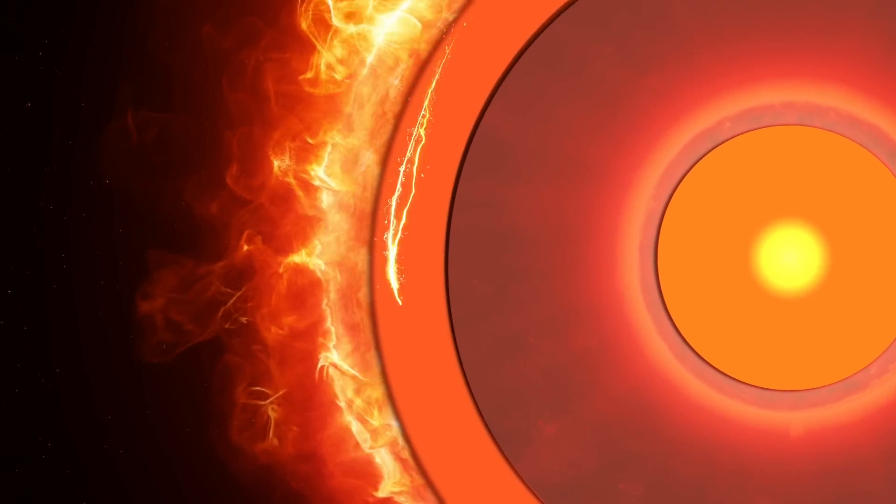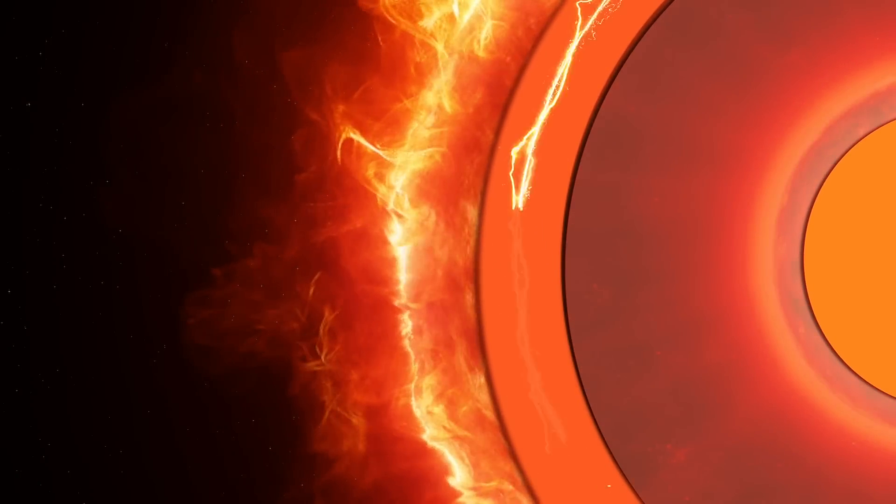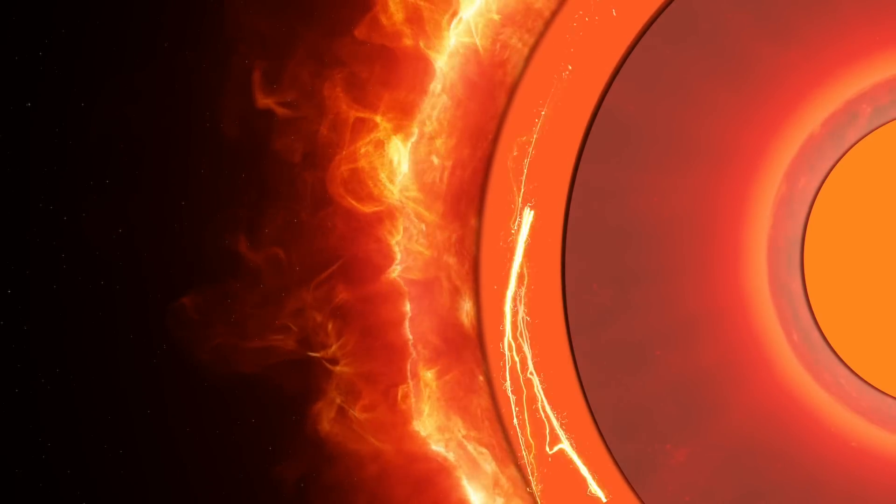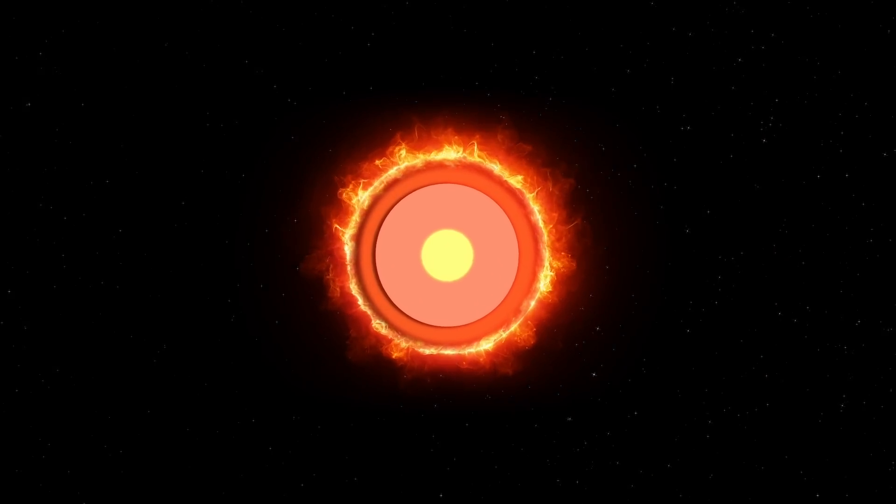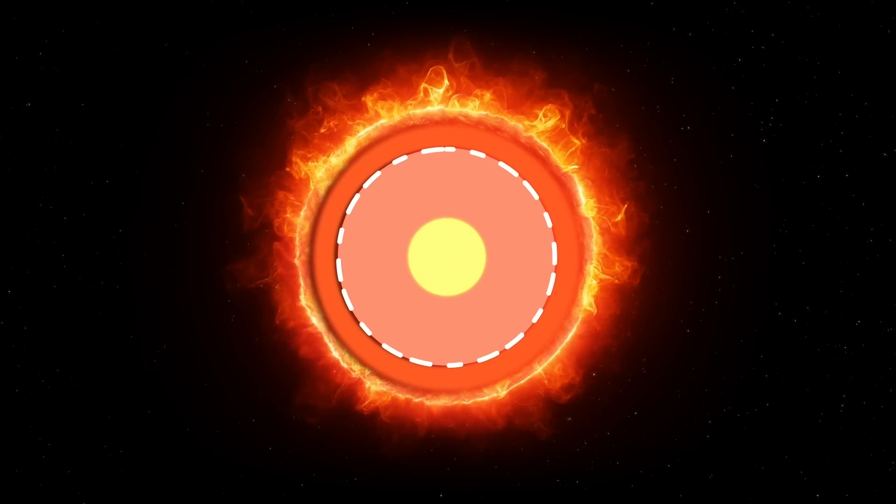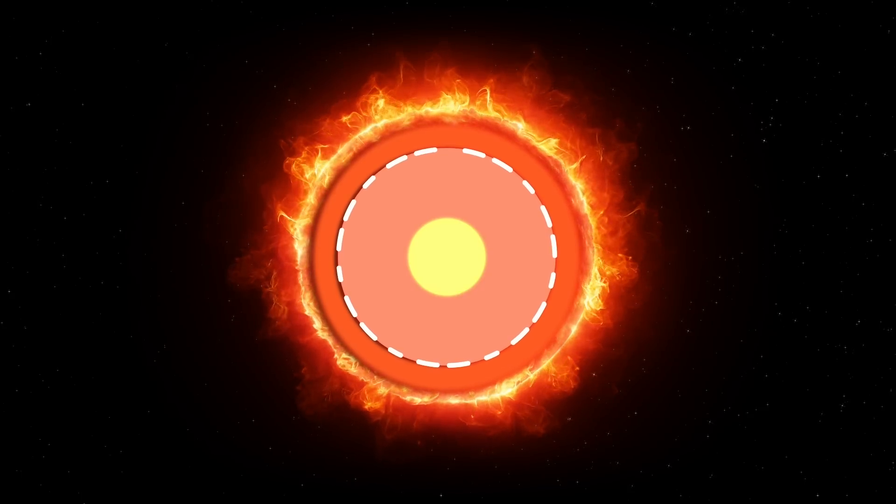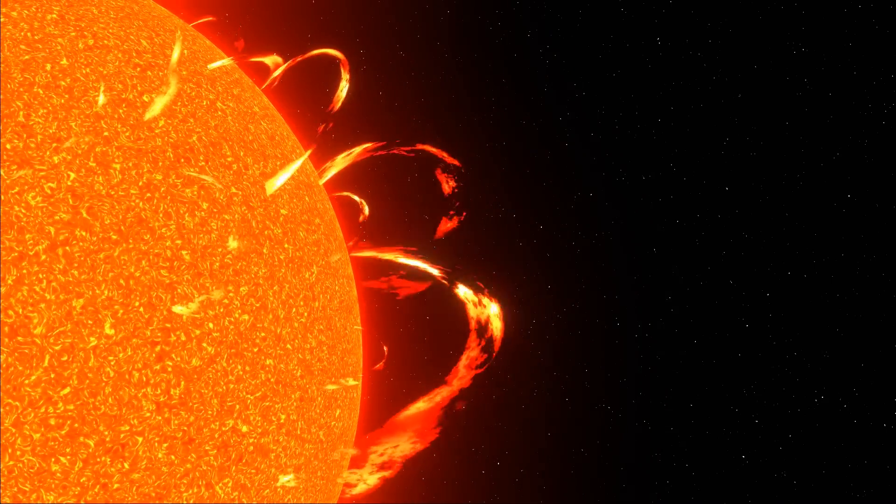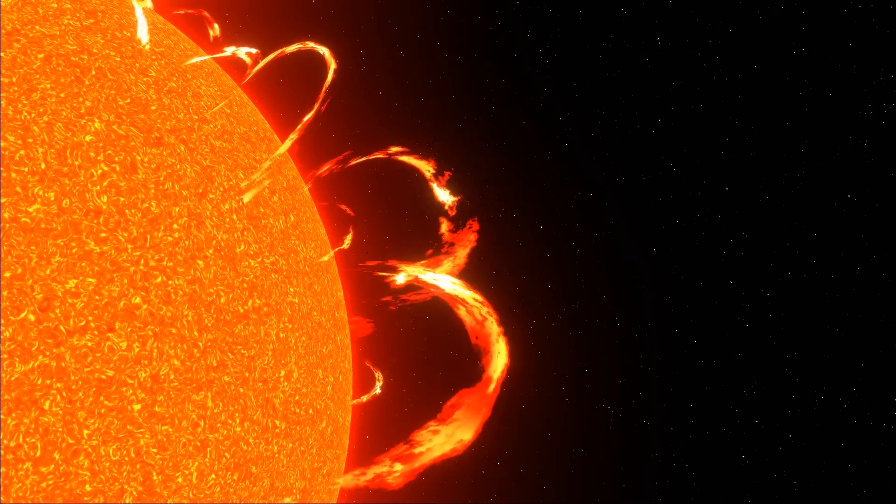The outermost layer of the Sun's interior is the convective zone, where energy is transported by convection. Hot plasma rises towards the surface, cools, and then sinks back down, creating convective currents. The solar dynamo mechanism operates primarily in the convective zone and the tachycline, a thin layer that lies between the radiative zone and the convective zone. The tachycline is crucial because it's where the Sun's differential rotation and shear flows play a significant role in generating the magnetic field.